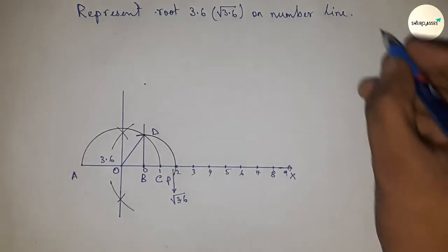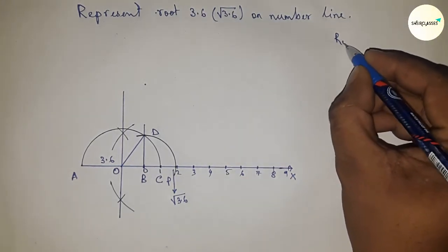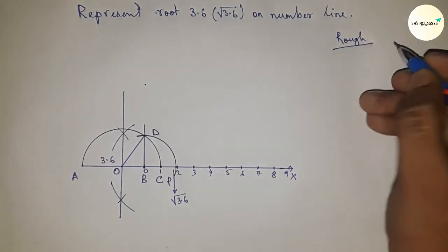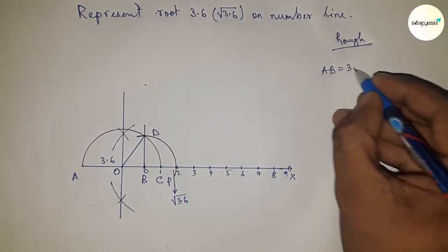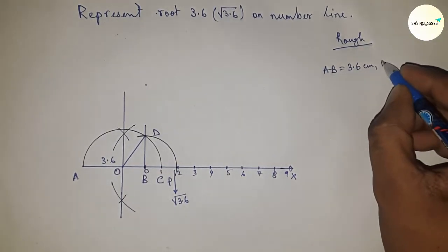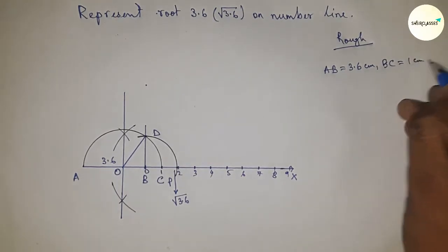Now let's discuss the back calculation. Given AB equals 3.6 centimeters and BC equals 1 centimeter.